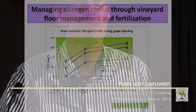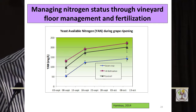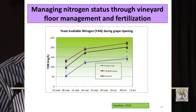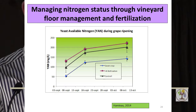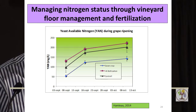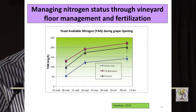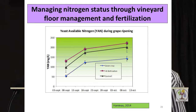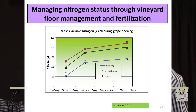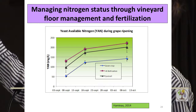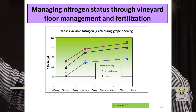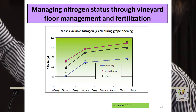Nitrogen can also be very easily managed — probably it is the most easy terroir factor to manage. Either by adding fertilizer if nitrogen is too low, or by implementing cover crop if nitrogen is too high. In this trial, the control showed moderate nitrogen; by fertilization, the yeast available nitrogen was easily brought up; and by putting in cover crop, the yeast available nitrogen was put down. So nitrogen is probably one of the terroir factors which can most easily be managed.